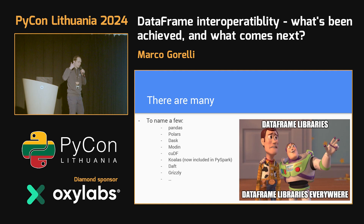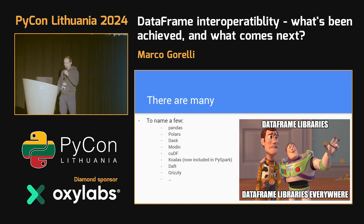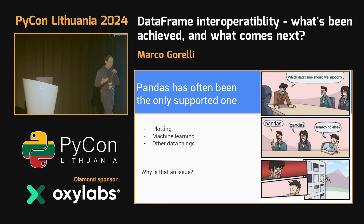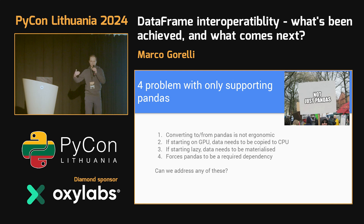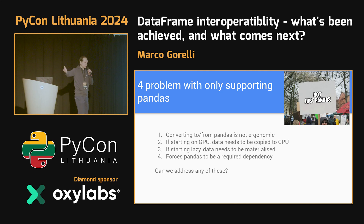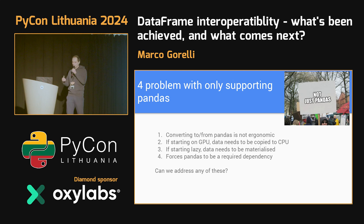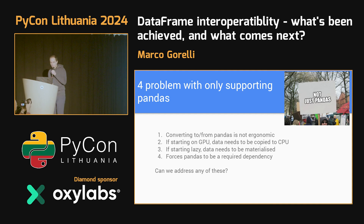If I ever go into a coma, the first question I ask when I wake up is: how many new data frames are there? And please tell me that they don't all follow the pandas API. The way that the data science landscape has typically responded to this vast array of diverse data frames has been by supporting pandas, and that's it. I think there are four fundamental problems. First, for users who are not using pandas, it's not ergonomic to have to repeatedly convert to and from pandas. Second, if users are starting with data on GPU or starting with lazy data, then you're breaking their workflows. That's a missed opportunity. And finally, pandas becomes a required dependency everywhere — pandas isn't a lightweight dependency, so this is a bit of an issue.